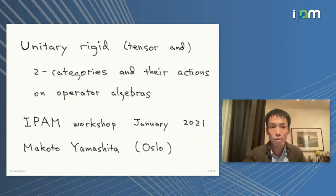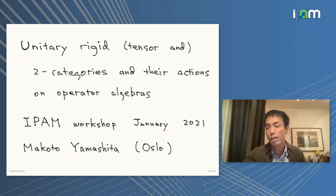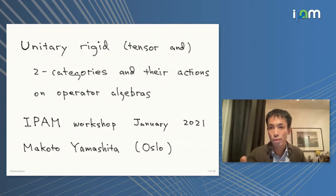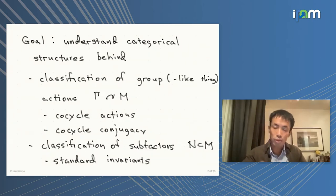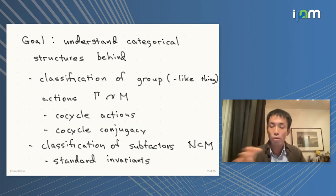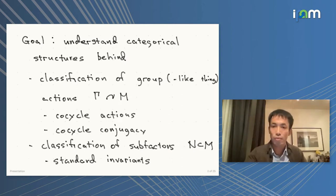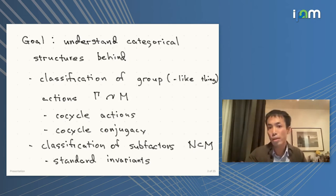As the title says, what I want to explain is the basics around unitary widget tensor categories. Most of the basics are going to be about two-categories in the unitary setting and the fundamental things about actions of those objects on von Neumann algebras — mostly von Neumann algebras. We saw some fundamental things around group actions on von Neumann algebras in Stefan's lecture yesterday, including cocycle actions and cocycle conjugacies.